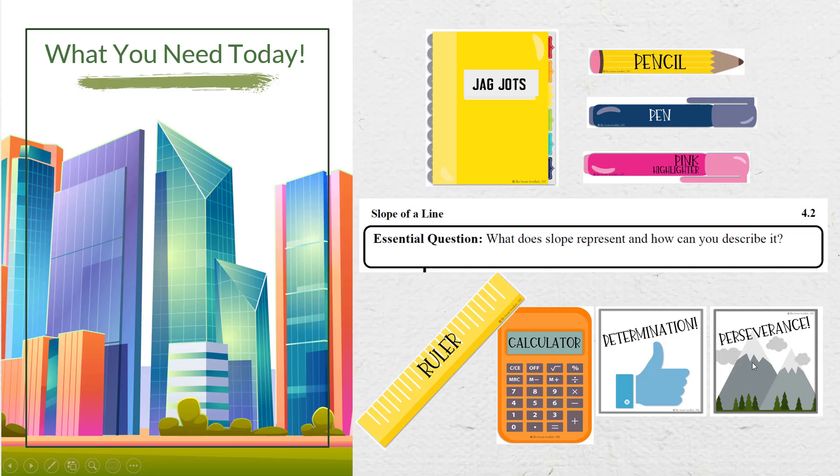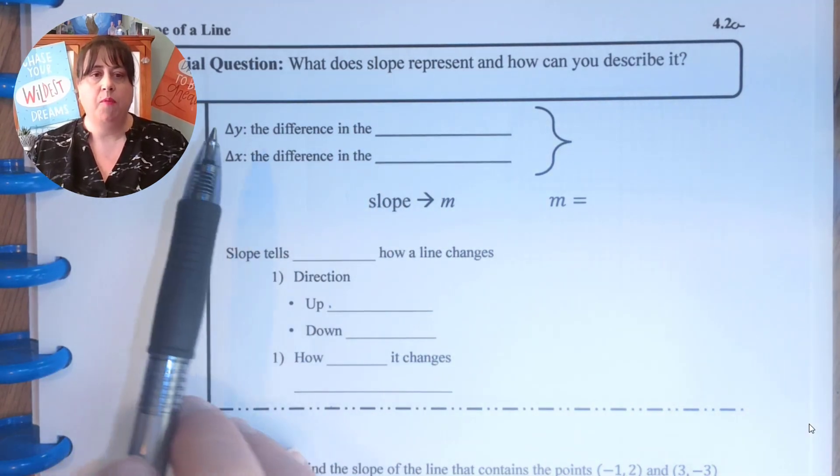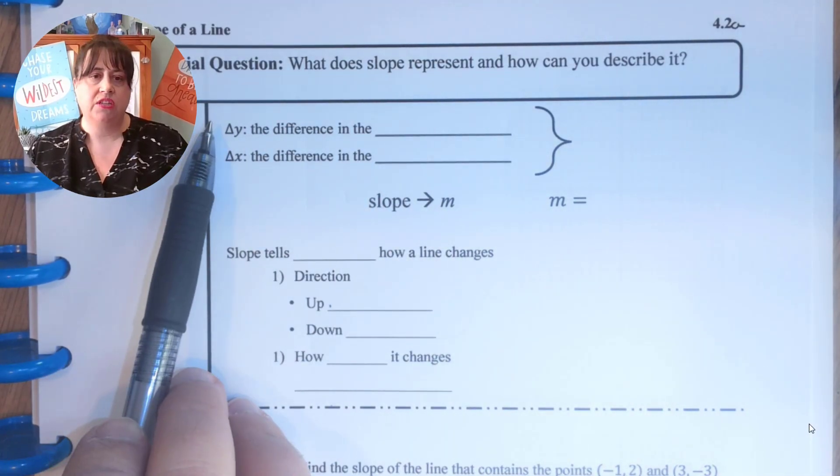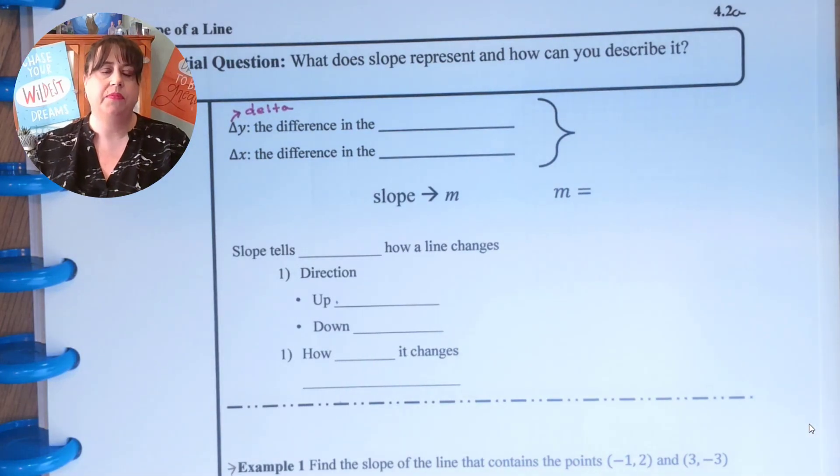So let's go ahead and get started right now. To begin with, let's define slope. I'm going to be using two notations, this little triangle y, that's the Greek delta, delta y.